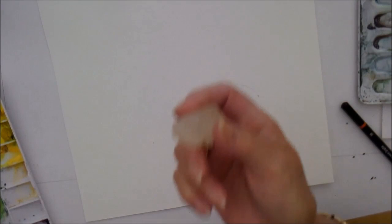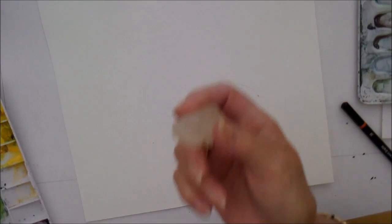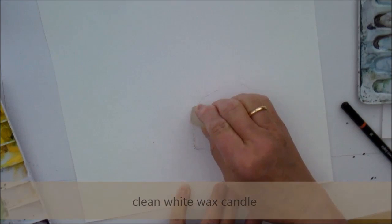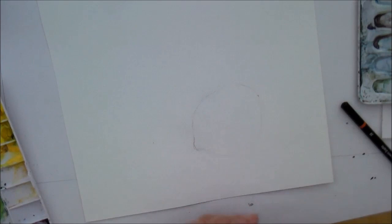Now, to get this resist, what it means is that the paper is resisting the paint. So we're going to use just an ordinary bit of a wax candle, make sure it's a clean white one. And what we're going to do is we're going to rub it lightly over the surface of the paper.